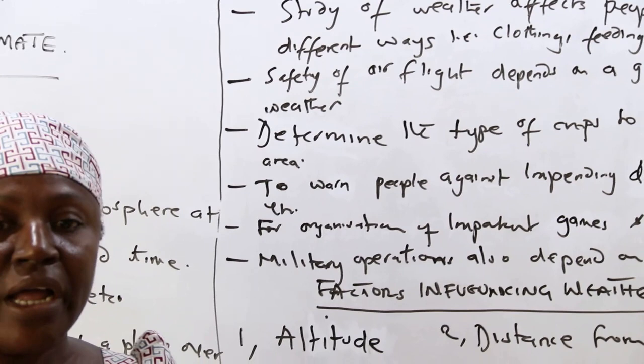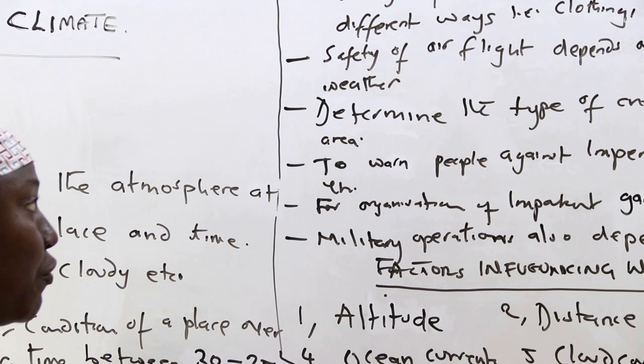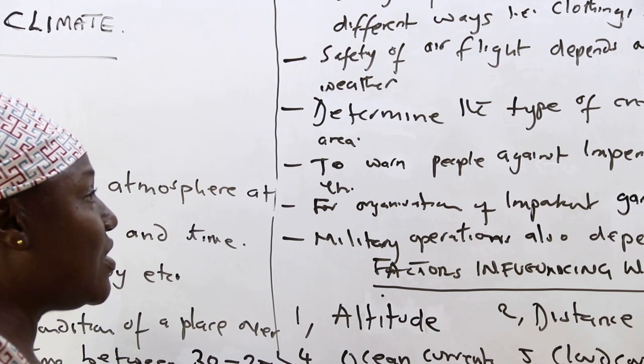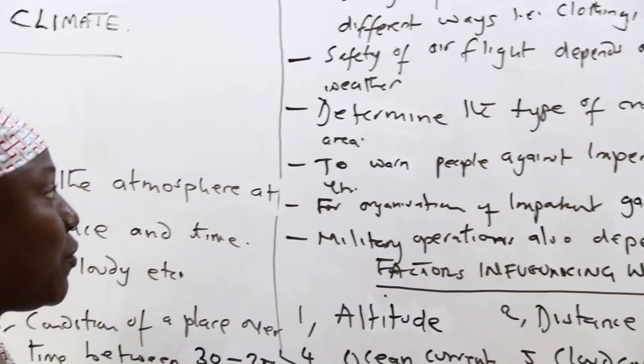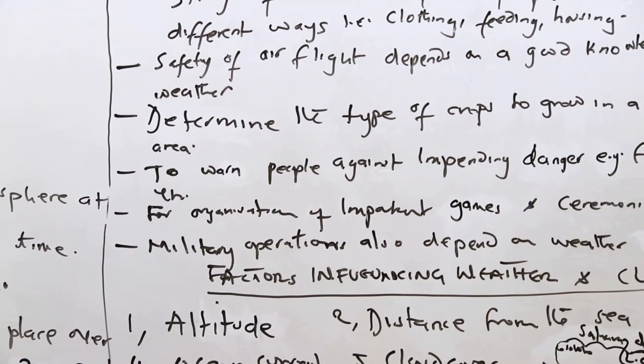The second reason why we study weather and climate is for the safety of air travelers. Visibility is very important, and that is why aircraft need to be warned before they take off. The meteorologists — those that study weather and climate — warn against any impending danger before the aircraft would take off.